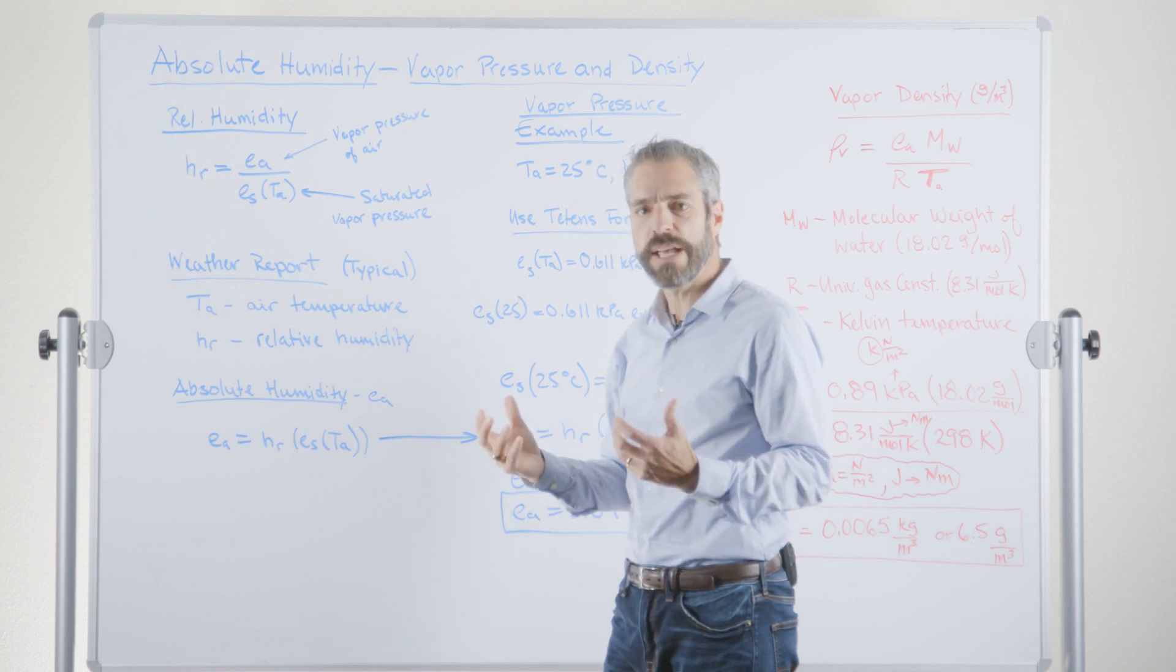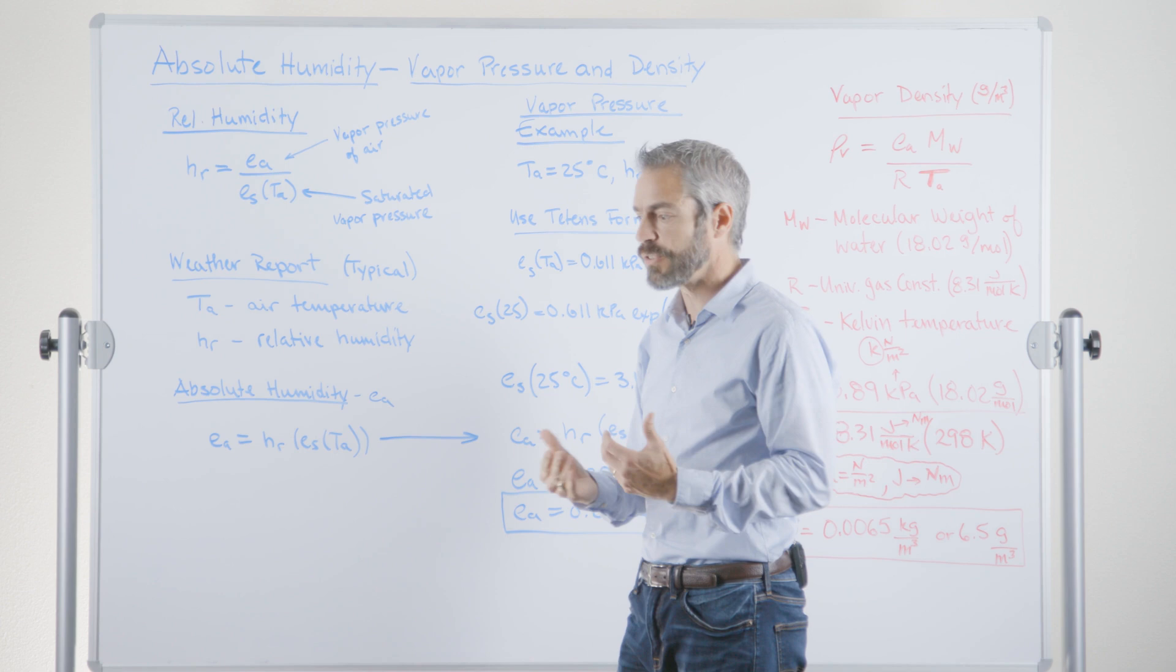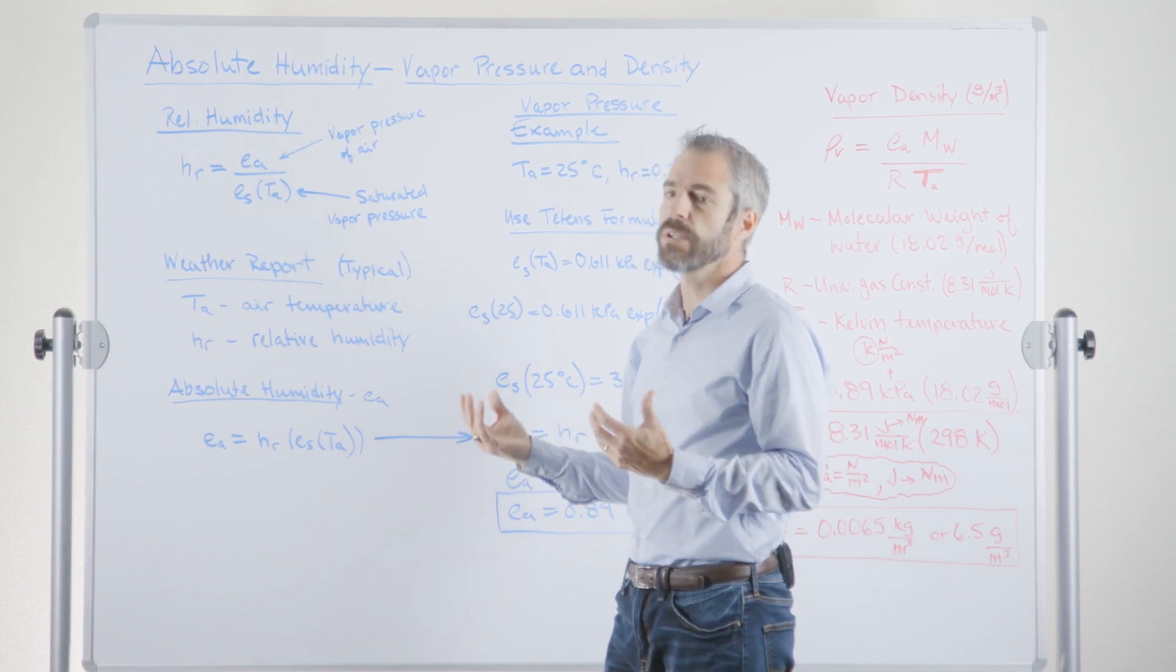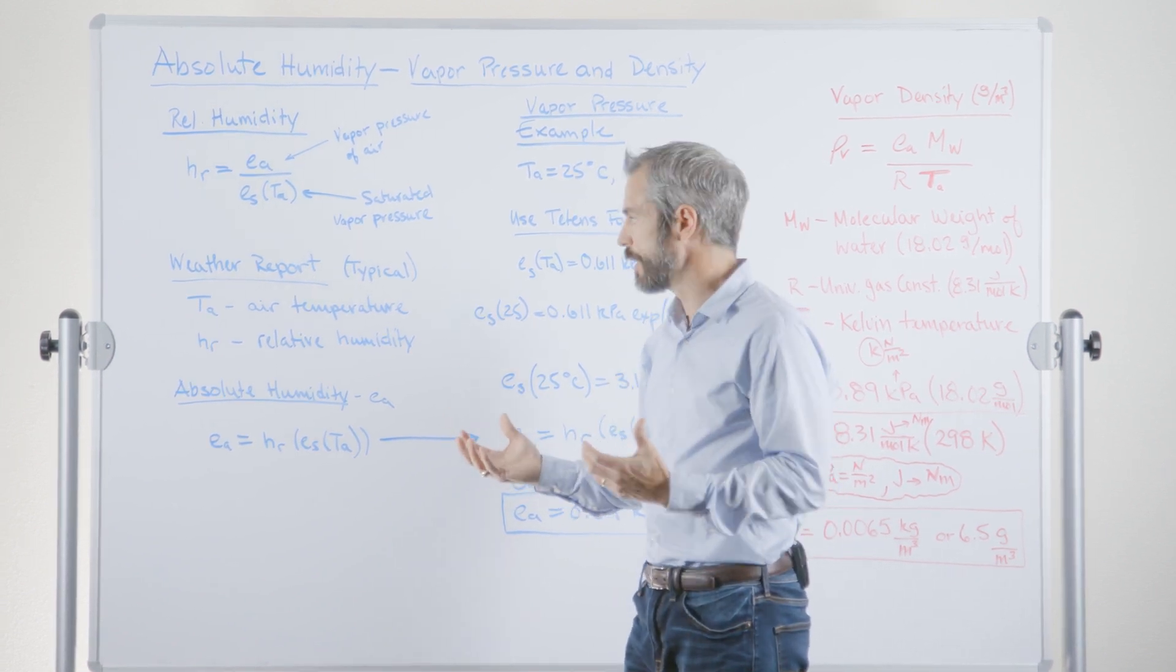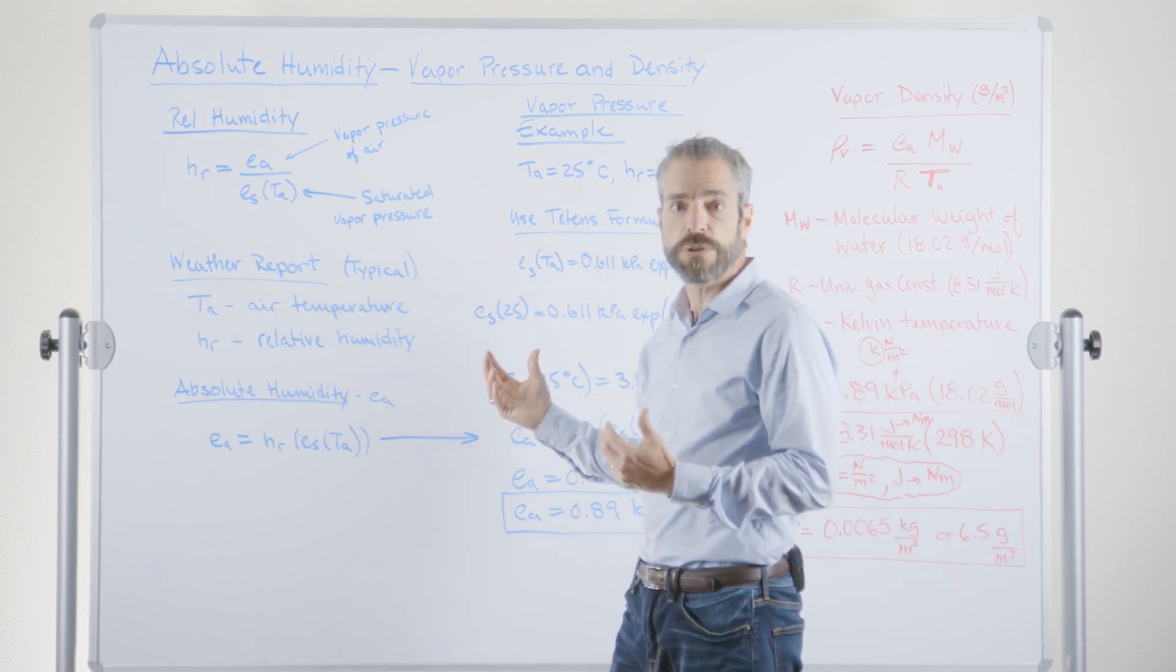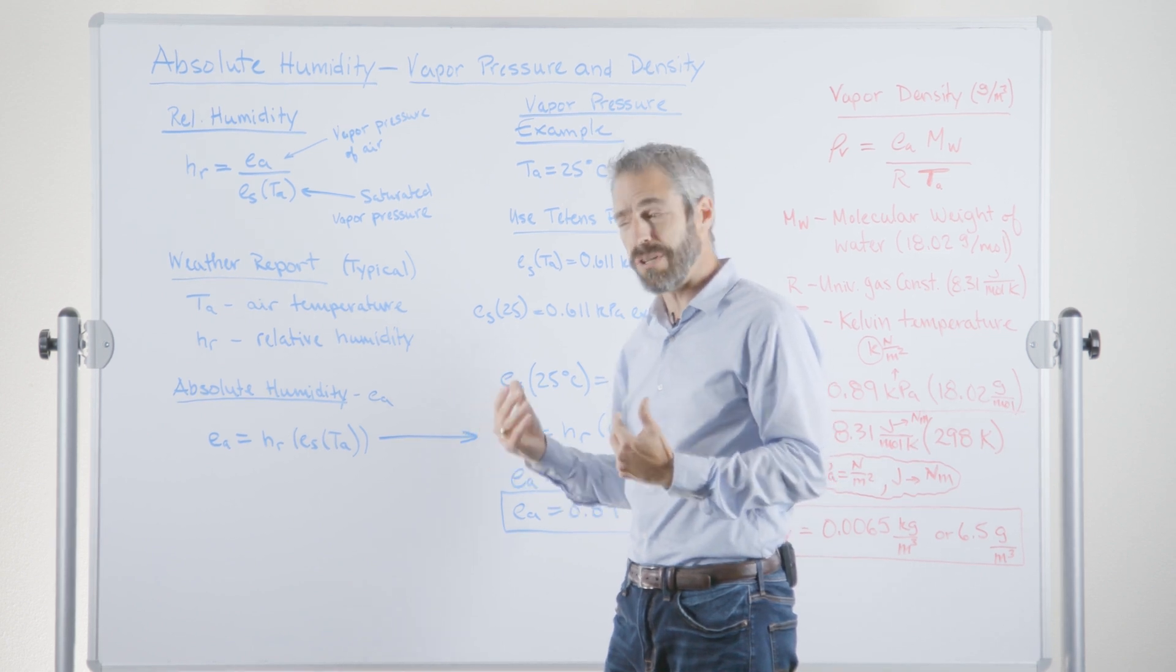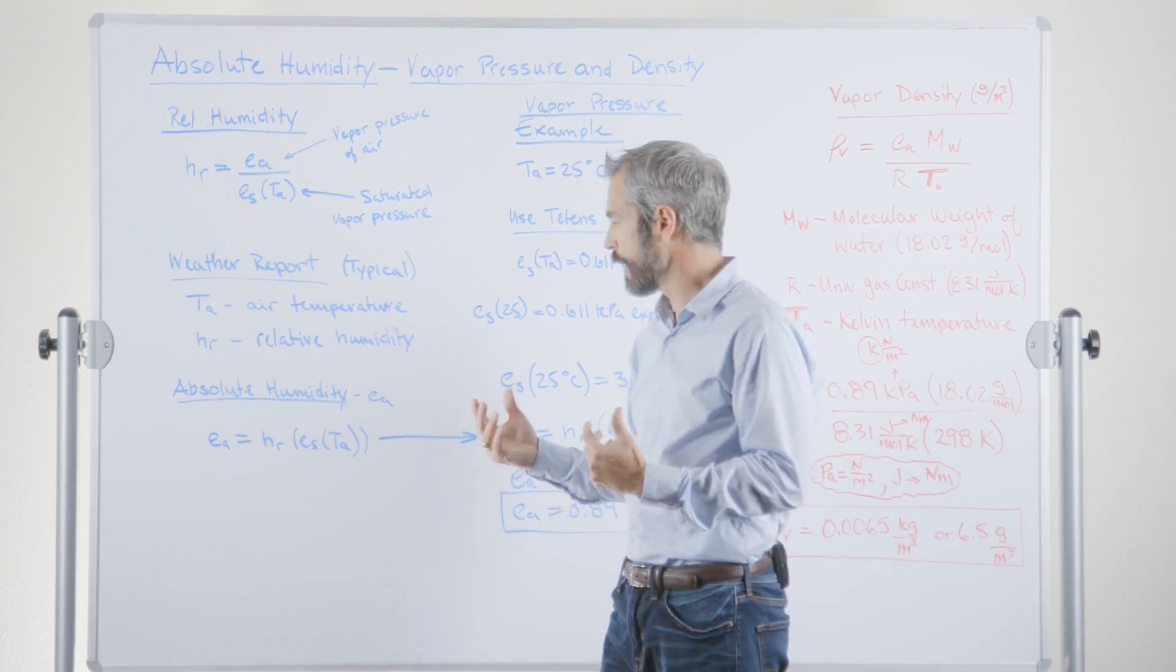So how do we take those values and turn them into something that we could use to compare different sites or to calculate fluxes or to calculate how much water is actually in the air? Well, we need to work through some of these other equations to get there, and I'm going to take you through it and give you an example so that you know how to do that calculation.